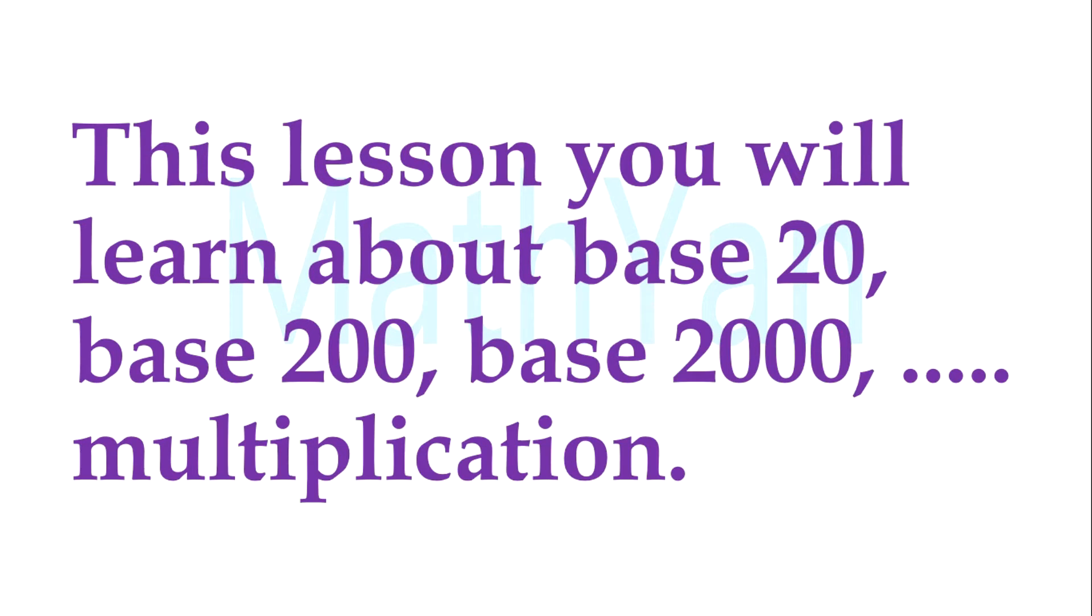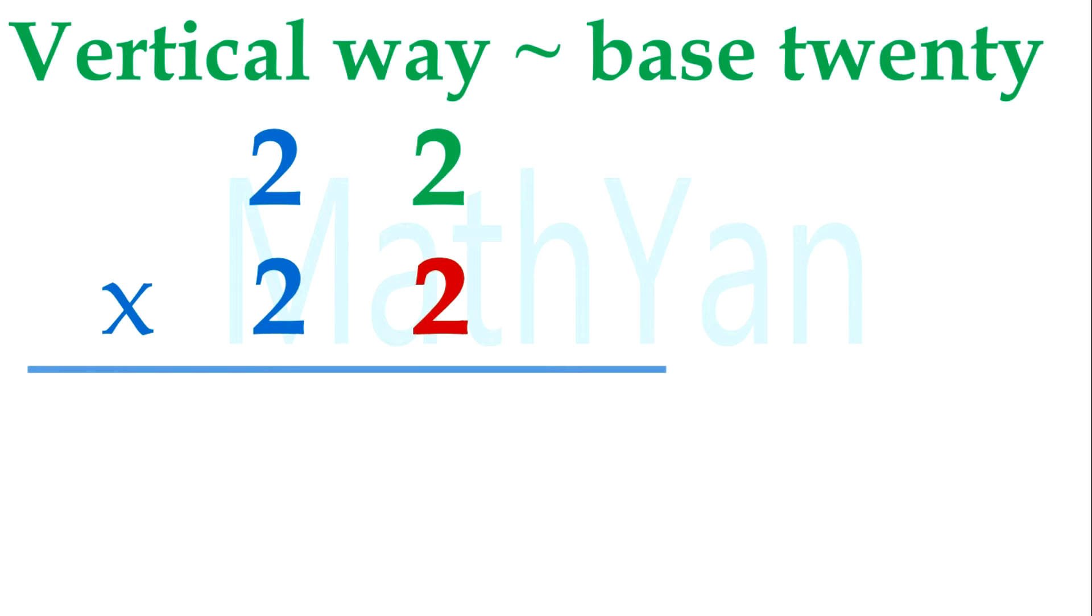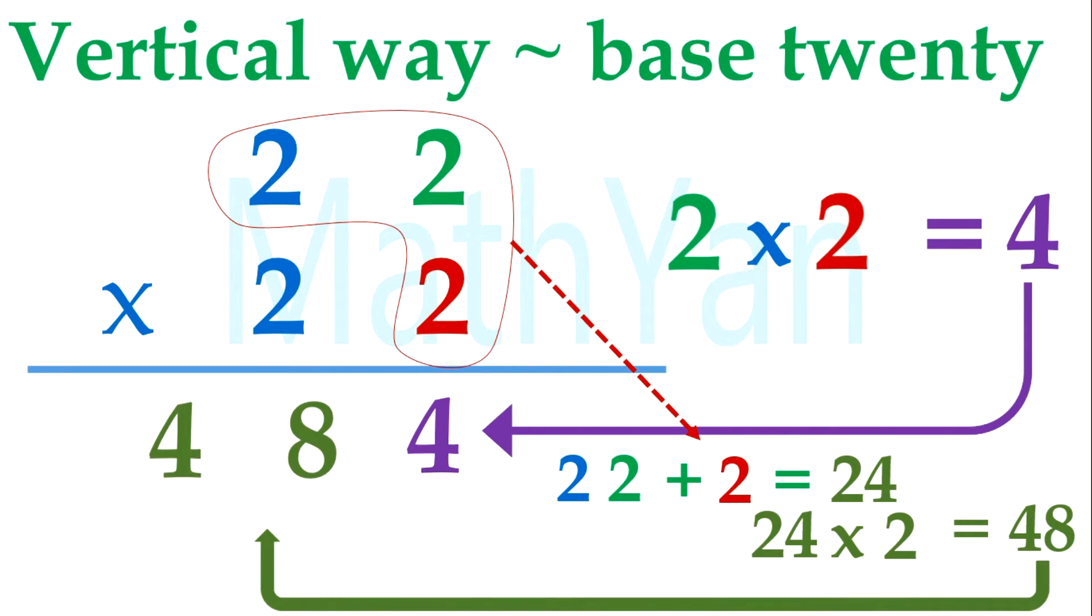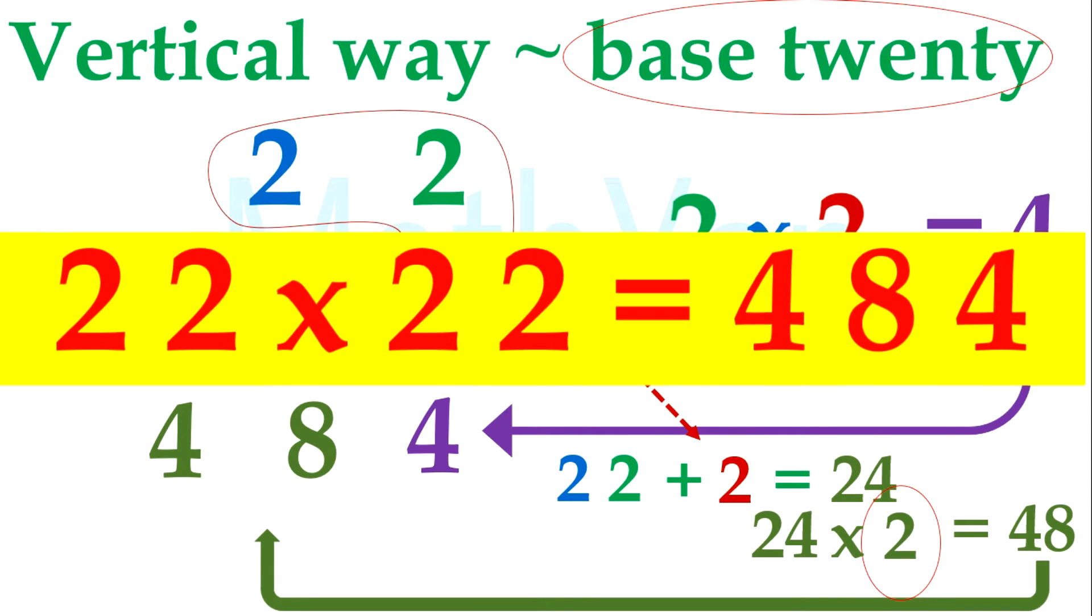The previous lesson is about base 10, base 100, and base 1000. We'll take a base 20 example: 22 times 22. 2 times 2 is equal to 4. Just put it up. So the second part is 22 plus 2 is equal to 24, but due to the base 20, you need to times 2, so it's 48. So 22 times 22 is equal to 484.